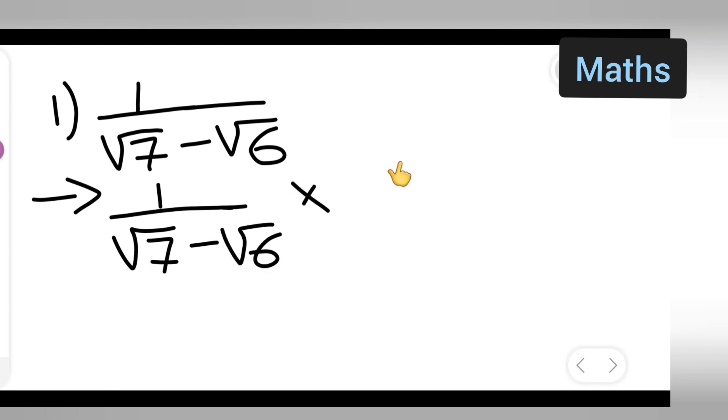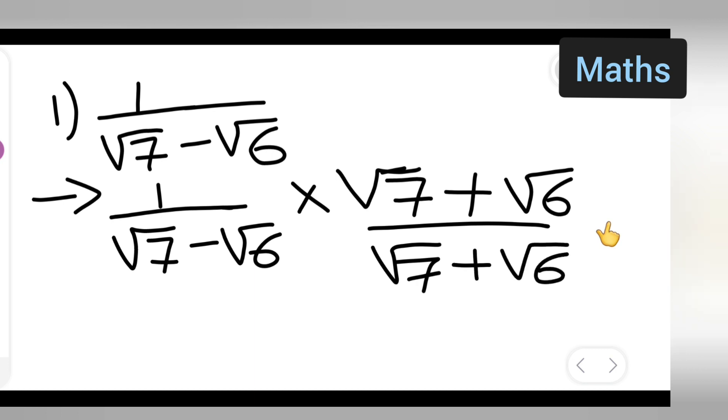You will have to multiply this with the same denominator, but only the sign will change. That is, root 7—in place of minus you have to put plus—root 6 upon root 7 plus root 6. Both numerator and denominator you have to multiply with root 7 plus root 6. Here minus is there, here plus is there.